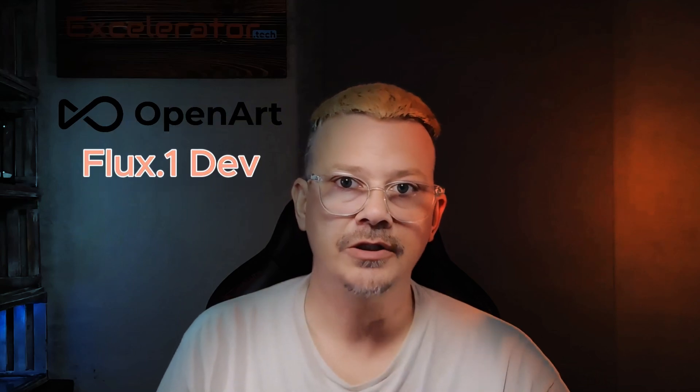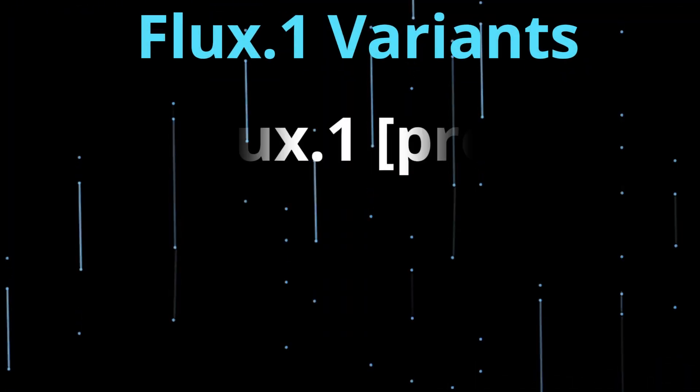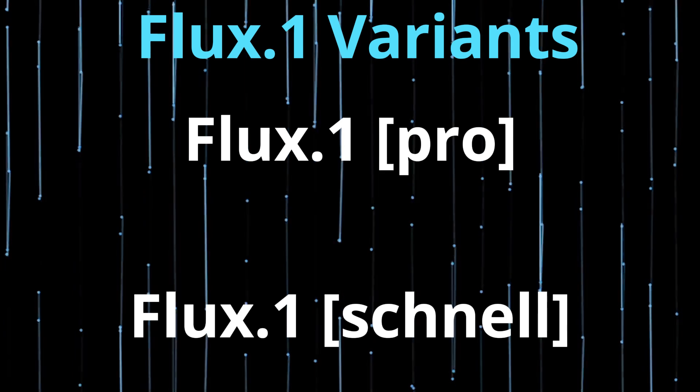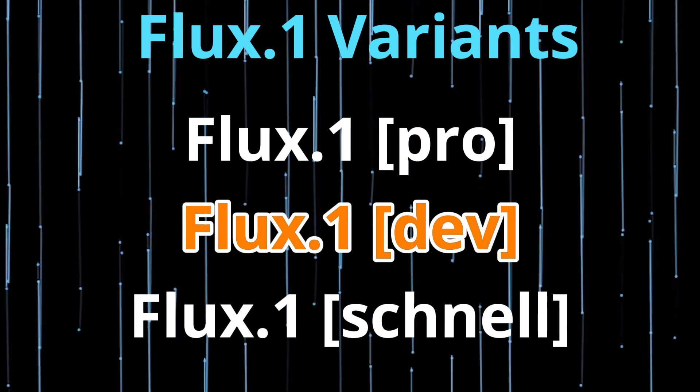OpenArt now has the Flux1 dev image generation model. We're going to check it out, but why do we even care? Well, Flux1 hit the scene a few months ago when Black Forest Labs dropped three versions of this model. They have the Pro, the fancy version, the Schnell version, which is really fast, and then the middle child, dev.